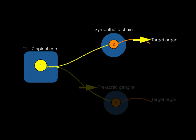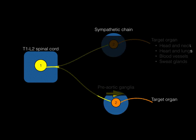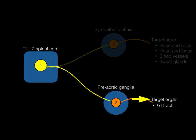The sympathetic chain target organs include head and neck structures, heart and lungs, blood vessels, and sweat glands — primarily blood vessels in the limbs and head, and sweat glands all over the body. The preaortic ganglia target organs include the GI tract including organs and accessory organs, the adrenal gland, blood vessels in the abdominal cavity, the renal system, and pelvic and perineal structures.